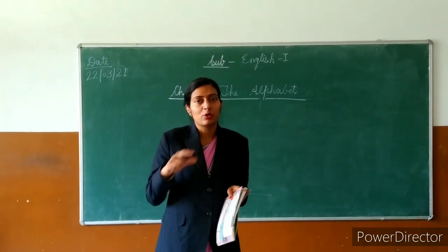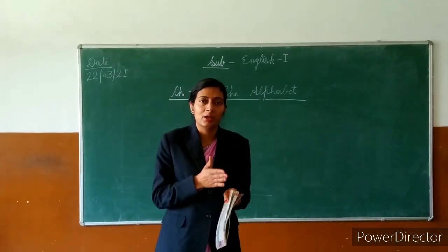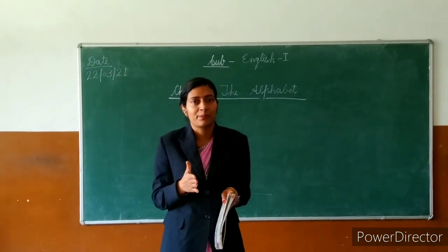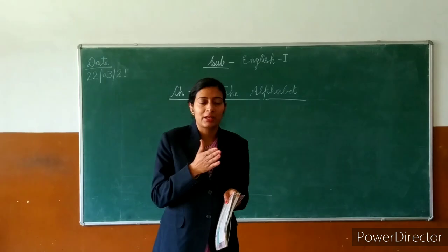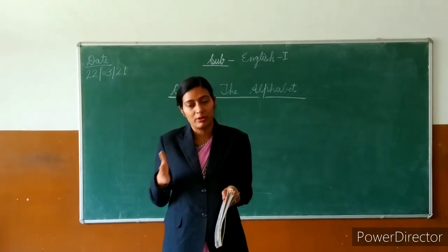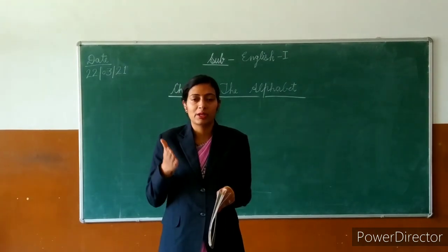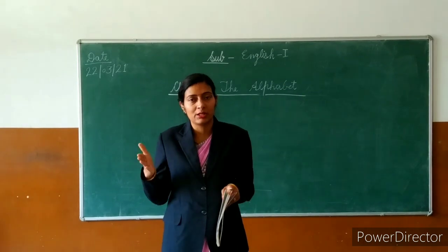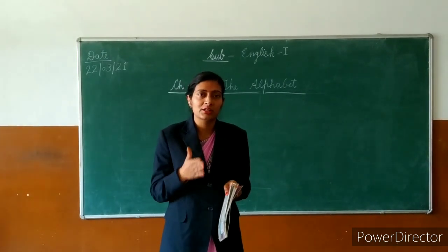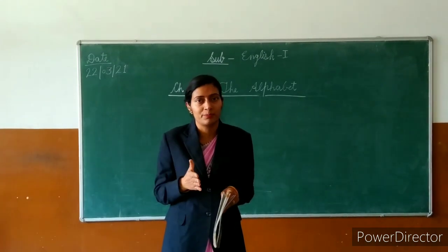Certain order means, like A, B, C — in English the alphabet follows a fixed order. So like A, B, C — that is a certain order, an alphabetical order.